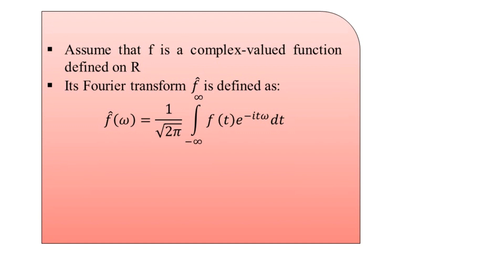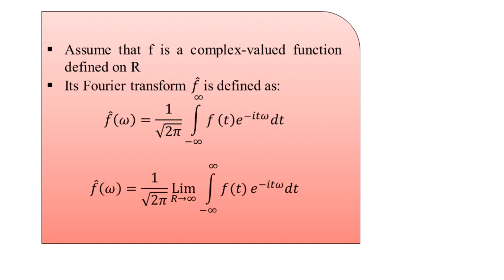The Fourier transformation can also be defined for any function f belonging to the functional space L². In this case, the integration may not be defined in the usual sense. The generalized representation is: F-cap of omega equals 1 over square root of 2π, multiplied by the limit as R tends to infinity of the integral from minus R to plus R of f(t) times e to the power of minus i·t·omega dt. Note: the bounds are minus R to plus R, not minus infinity to plus infinity.